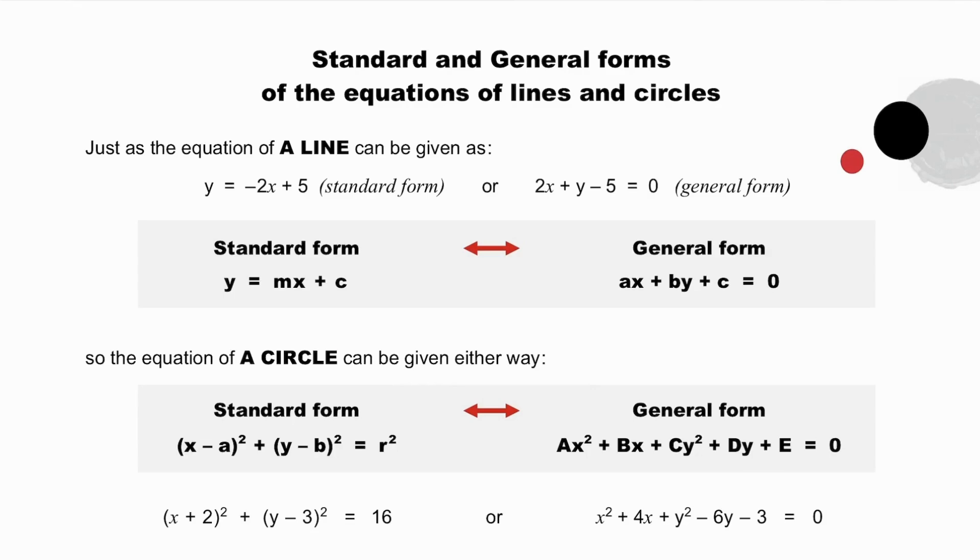So too, the equation of a circle can be given either way. In the standard form, (x - a)² + (y - b)² = r², or the general form, similar to the general form of the equation of a line where we have a zero on the right-hand side. For example, this equation in standard form, when multiplied out, converts to this equation in the general form.